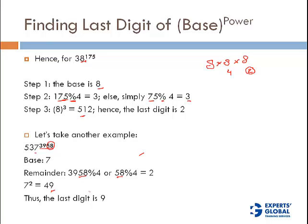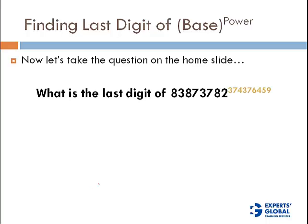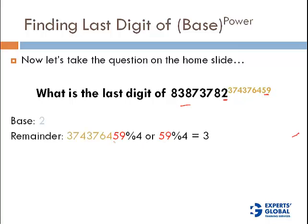Now let's take that big inhuman question from the opening slide. However big these numbers are, only a few digits matter to me: the last digit of the base and the last two digits of the power. Step 1: the base digit is 2. Step 2: the remainder of the last two digits of the power divided by 4 — those two digits give a remainder of 3. Therefore 2 raised to the power 3 — my answer is 8.